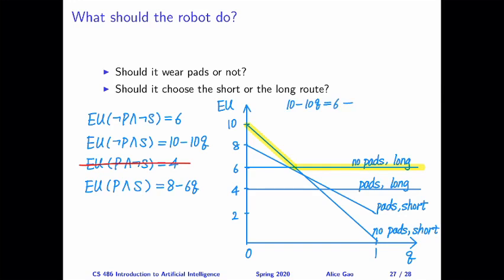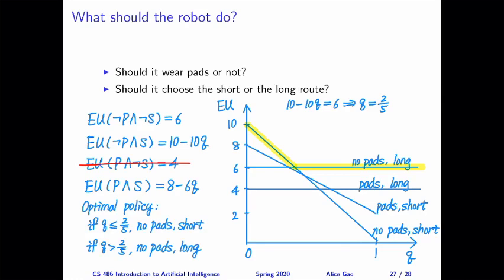This gives Q = 2/5. In decision theory, we call the solution to this kind of problem a policy — it tells us what to do in different situations. Our optimal policy is: if Q ≤ 2/5 (about 0.4), the robot should not wear pads and choose the short route. If Q > 2/5, the robot should not wear pads and choose the long route.